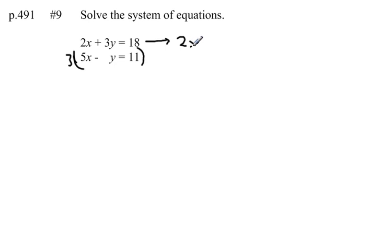The top equation I'll bring over. 2x plus 3y equals 18. Bottom equation, if I multiply everything by 3, I get 15x minus 3y equals 33.